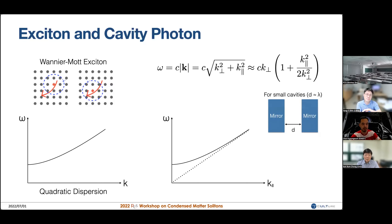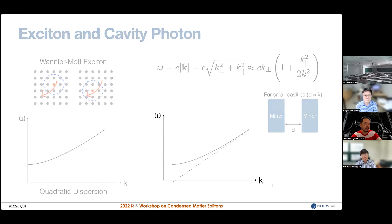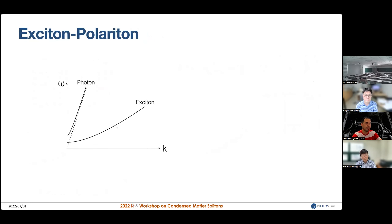The in-plane photon essentially picks up a quadratic dispersion relation. If you just consider the in-plane dispersion, at very large k it approaches the linear dispersion limit. If you combine these two systems — the photon dispersion and the exciton dispersion — both quadratic at small k, but if the photon energy and exciton energy are far apart, nothing happens. If you bring them close together and make them cross, you can zoom in on the crossing region.